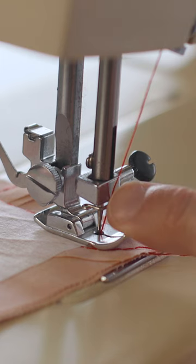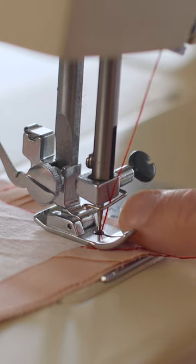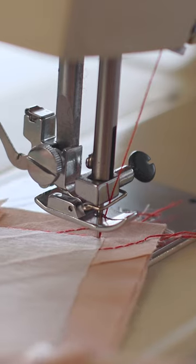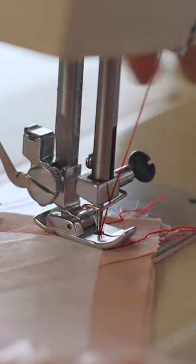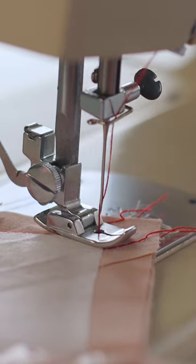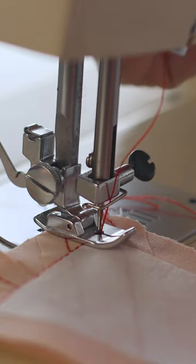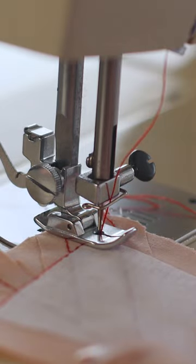Once I'm about one stitch away from the corner, I make sure I have my needle down, I lift up, I turn my fabric at a 45 degree angle, I go over one stitch, lift up again, and then continue along in the new direction.